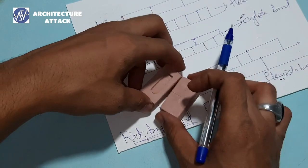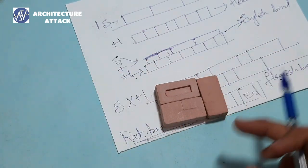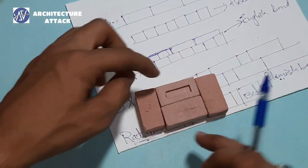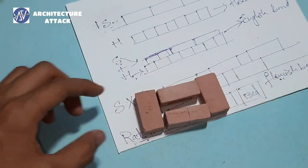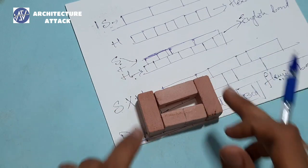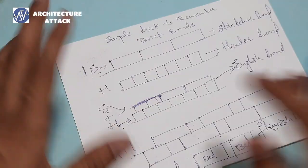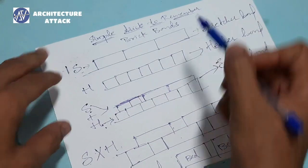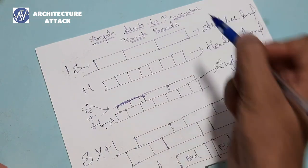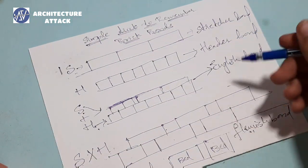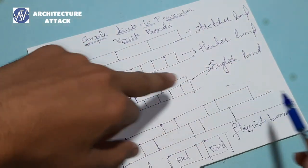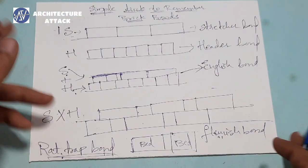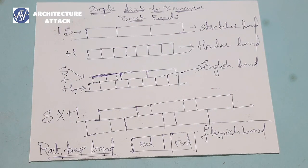For rat trap bond: if you know Flemish bond, rat trap bond is the same — the only difference is that in Flemish bond in elevation you see the stretcher face, while in rat trap bond you see the bed face — like bed, header, bed. It's a simple trick to remember all these bonds, though sometimes it can be confusing between Flemish bond and English bond, but this mnemonic will help you keep them straight.